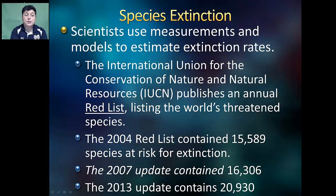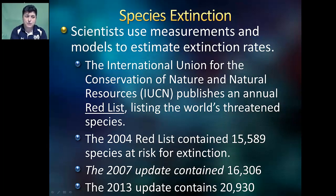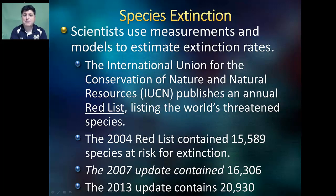Scientists use these measurements and models to estimate extinction rates. The International Union for the Conservation of Nature and Natural Resources, the IUCN, publishes an annual red list of the world's threatened species. In 2004 the list contained 15,589 species. The 2007 update contained 16,306. The 2013 update contains 20,930 species at risk for extinction. As you can see, with each consecutive update the number of species at risk is increasing.